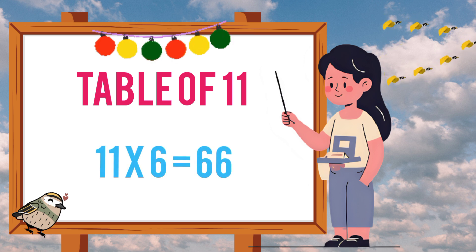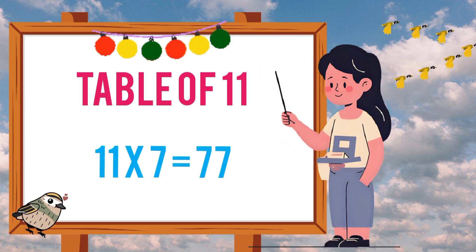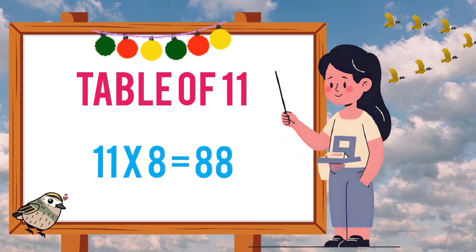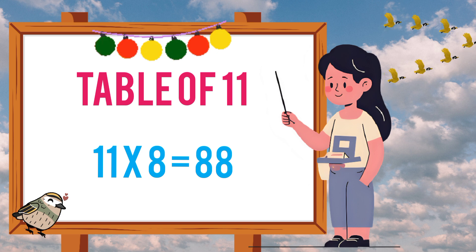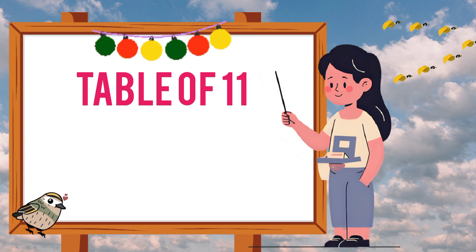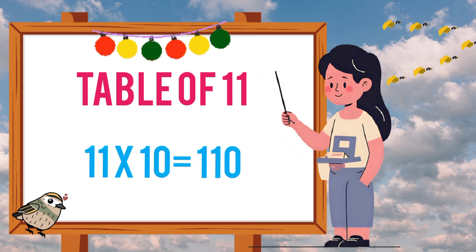Eleven sixes are sixty-six. Eleven sevens are seventy-seven. Eleven eights are eighty-eight. Eleven nines are ninety-nine. Eleven tens are hundred-and-ten.